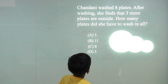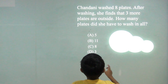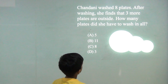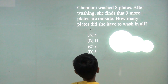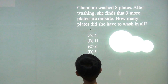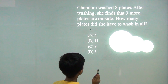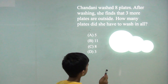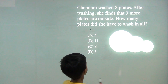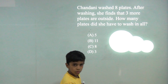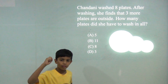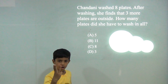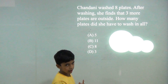She washed 8 plates. After washing, she finds that 3 more plates are outside. How many plates did she have to wash in all? So we will do 8 plus 3. 8, 9, 10, 11. So the answer would be 11.